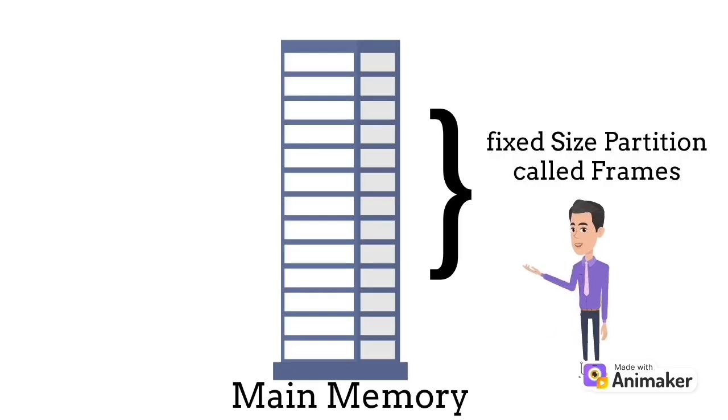First of all, we see in main memory a fixed size partition called frames. For understanding purposes, let us take one frame size as two bytes.